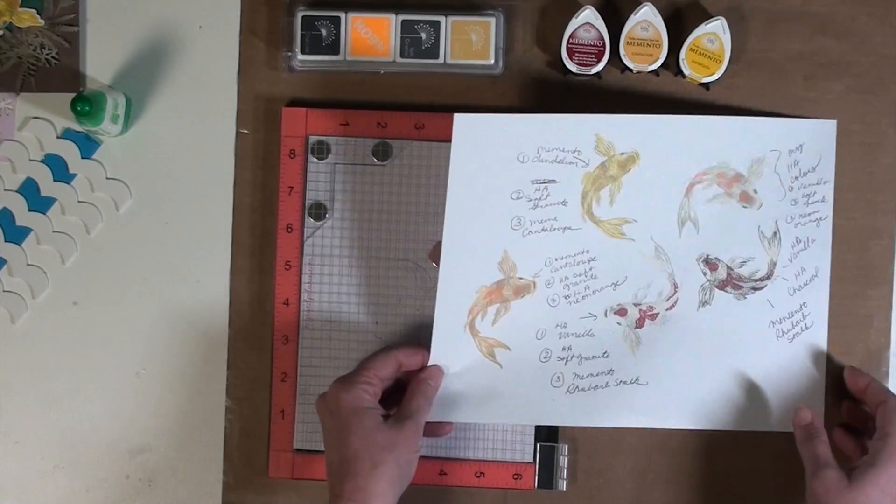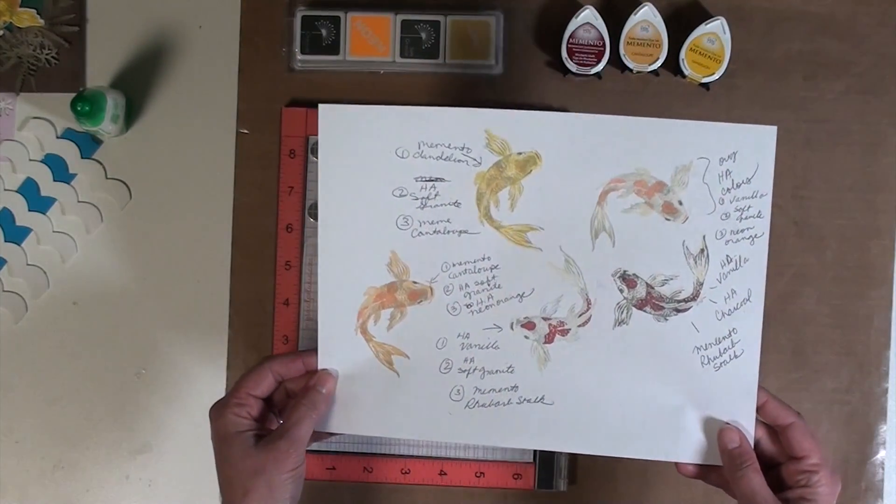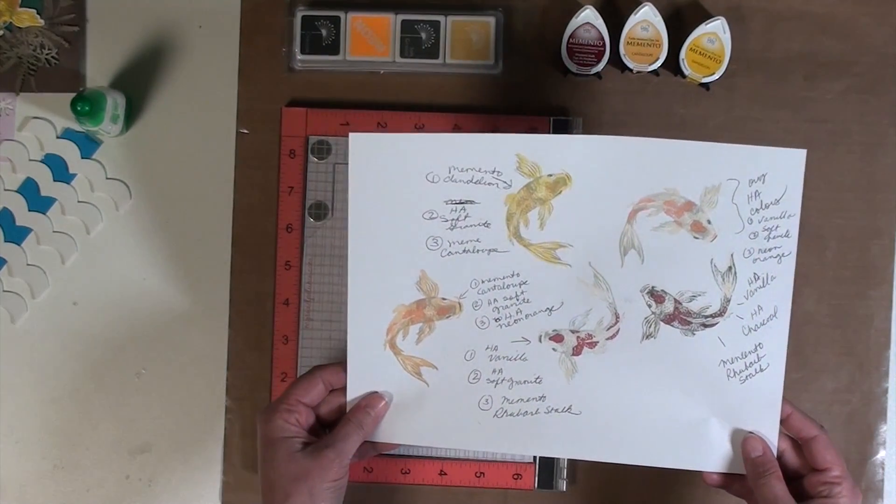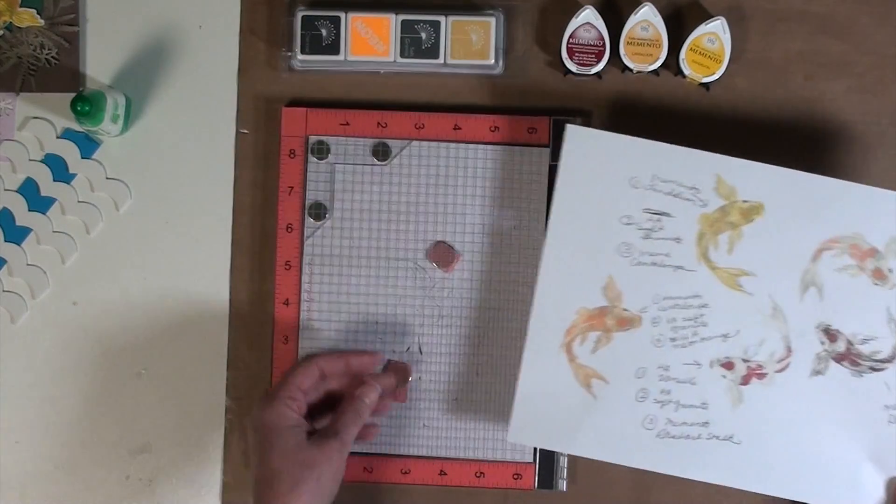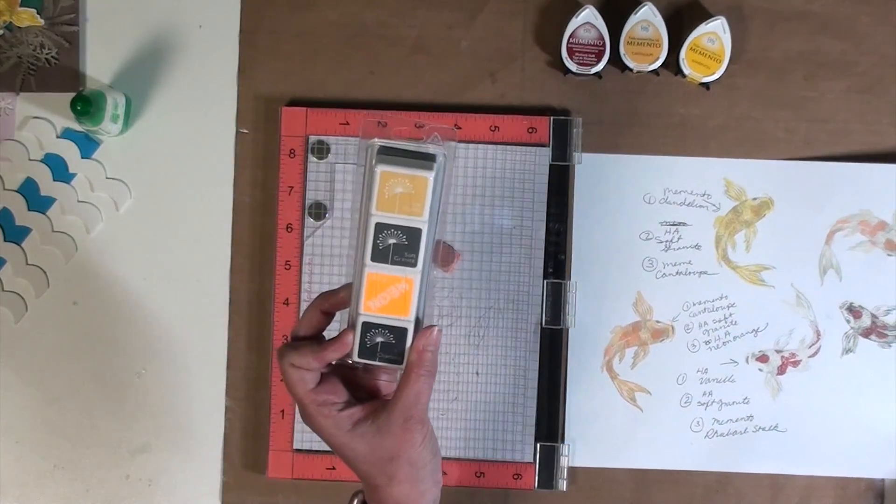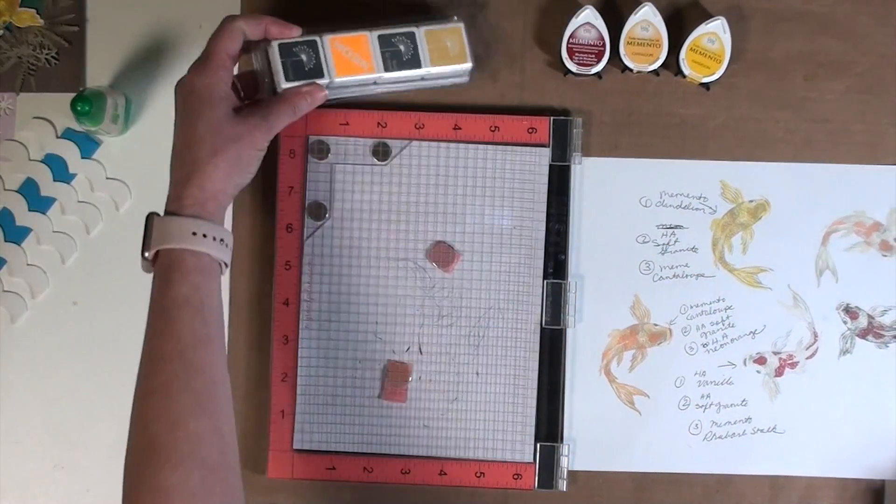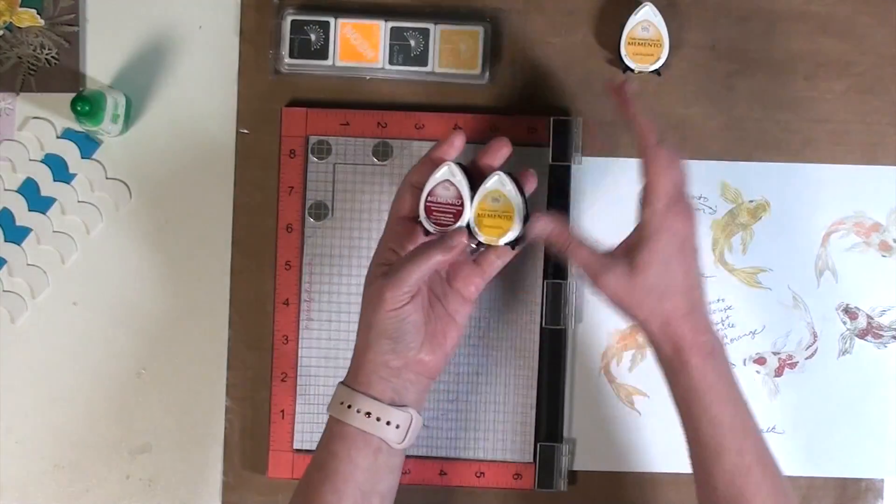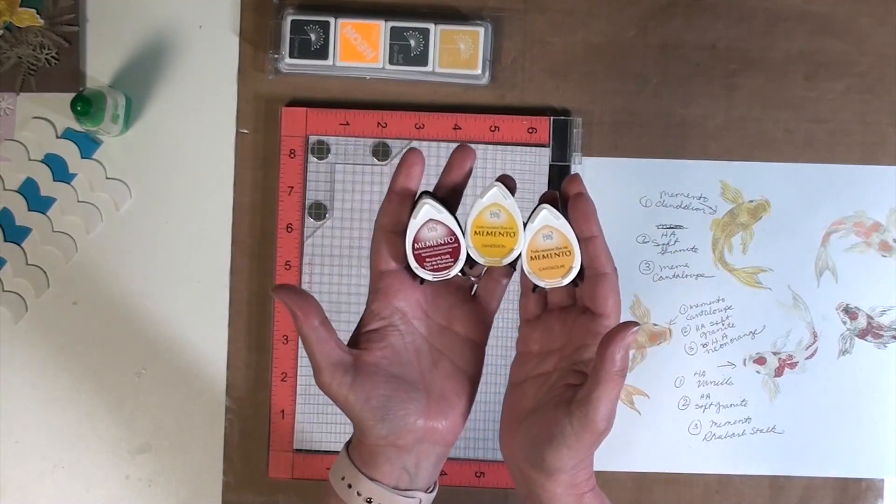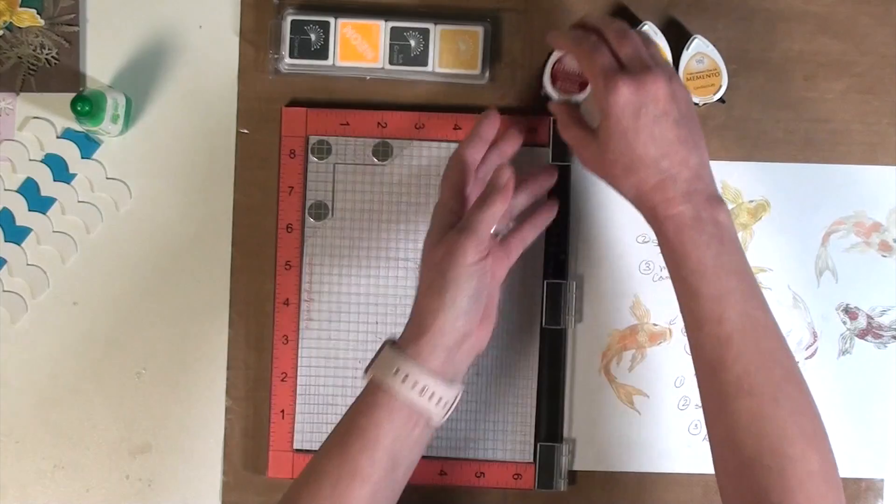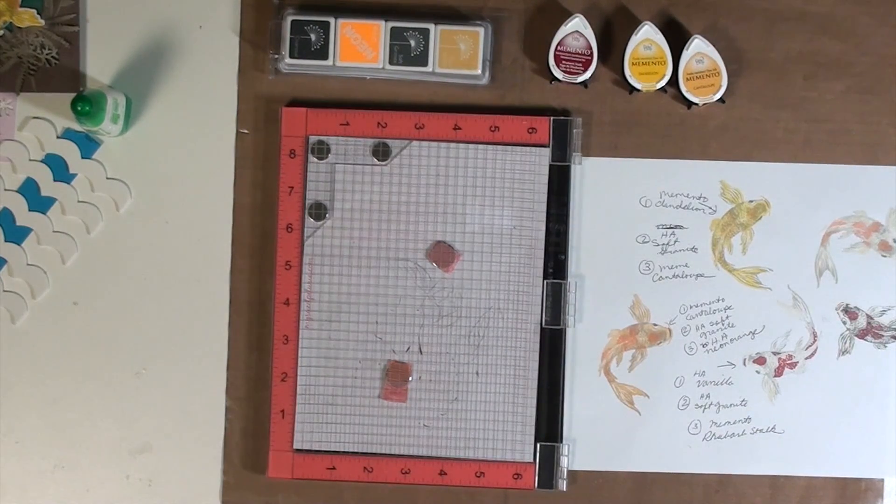I did a test run before stamping the fish onto Neenah silver white cardstock. So I took a piece of copy paper and practiced some different color combinations including the standard colors that come with the Hero Arts layering set as well as three different Memento colors in order to get three different color combos for the fish.